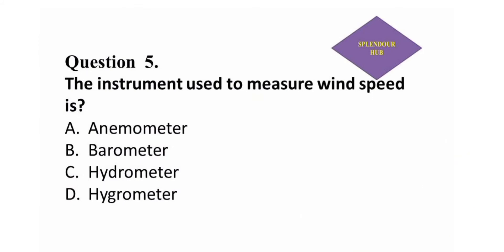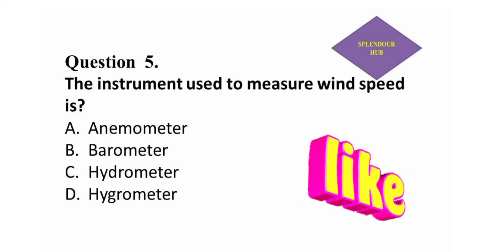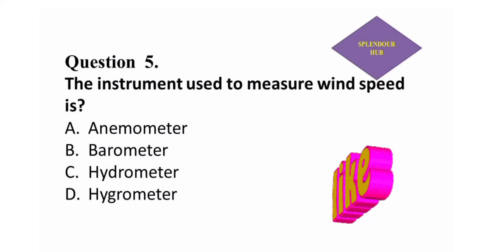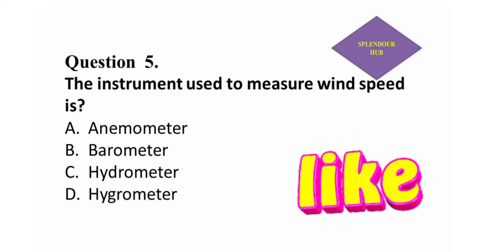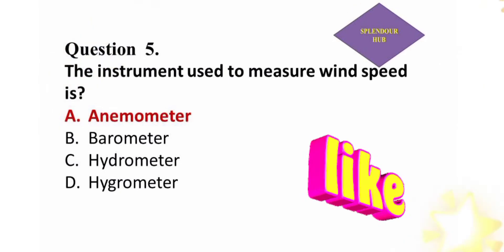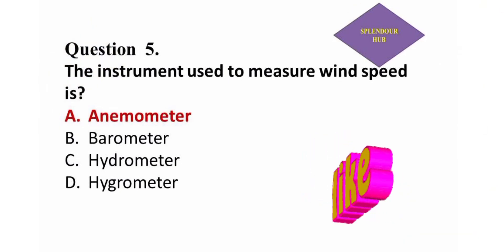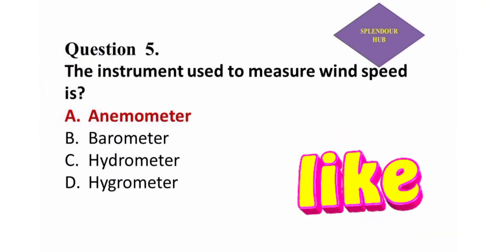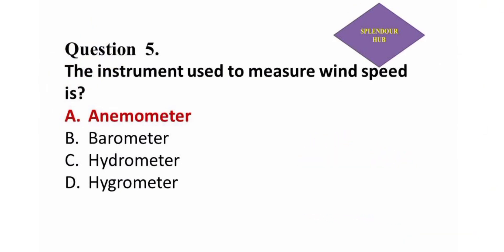Question 5: The instrument used to measure wind speed is — option A: anemometer, option B: barometer, option C: hydrometer, option D: hygrometer. Answer: The instrument used to measure wind speed is anemometer.